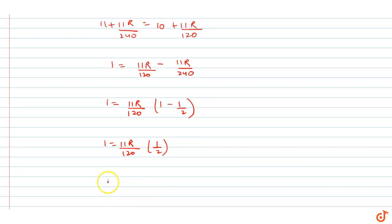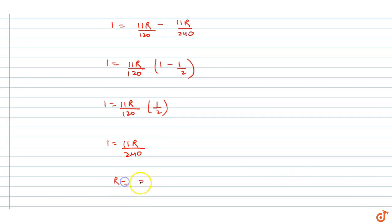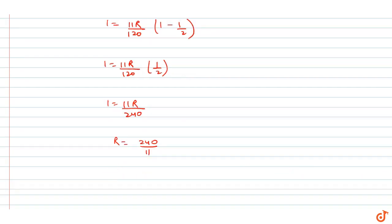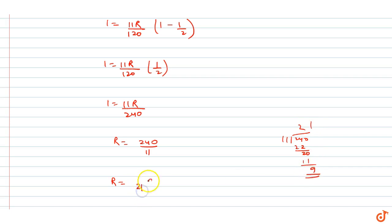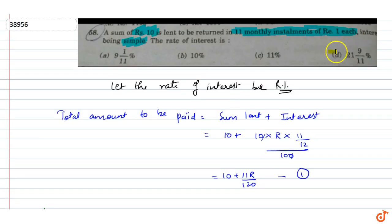Therefore 1 = 11R/240, which gives R = 240/11. Dividing 240 by 11: 11×21 = 231, remainder 9. So R = 21 and 9/11 percent. The rate of interest is 21 9/11%, which is option D. This is our solution.